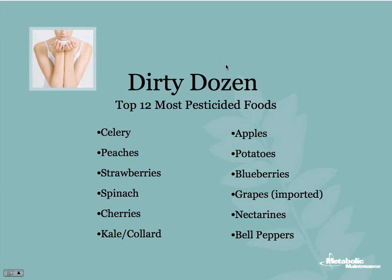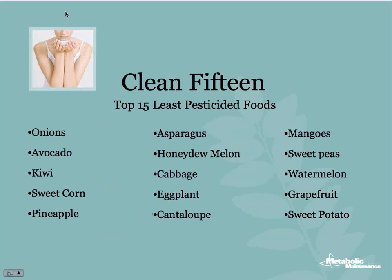This next list is called the Clean 15 — the top 15 least pesticide foods. Because of their thick skin, these foods are not susceptible to many bugs that try to eat them, so there's no need to spray them with pesticides. You can see onions, avocado, kiwis, corn, pineapple, et cetera — these have thick skins, bugs aren't going to get through there. So these, even as inorganic, are going to have very few pesticides.